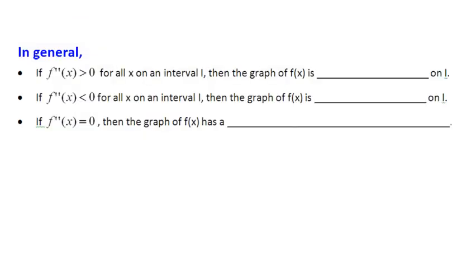In general, if the second derivative is positive on an interval, that section of the graph is concave up. If the second derivative is negative, that section is concave down. And if the second derivative is equal to zero, then it's likely to be a point of inflection — though we'll talk more later about what happens when the second derivative equals zero.